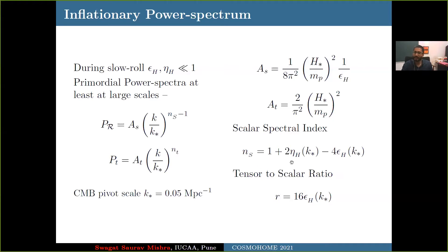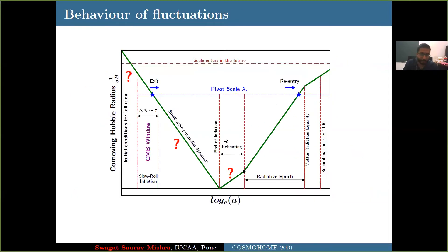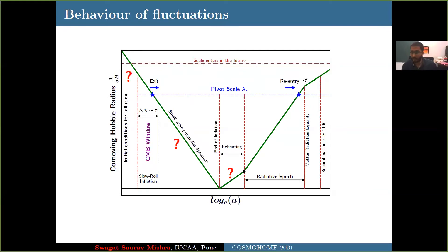The two parameters important for our discussion are the scalar spectral index ns — actually ns minus 1 — and the tensor-to-scalar ratio r, which equals 16 times epsilon. In the slow roll regime, since these quantities are small, ns is close to 1 at the 2% level. Fluctuations are produced as quantum fluctuations in the sub-horizon scale, which are stretched to super-horizon scales. They remain constant and later make a Hubble re-entry, creating density fluctuations for the scalar case and gravitational waves for the tensor case.